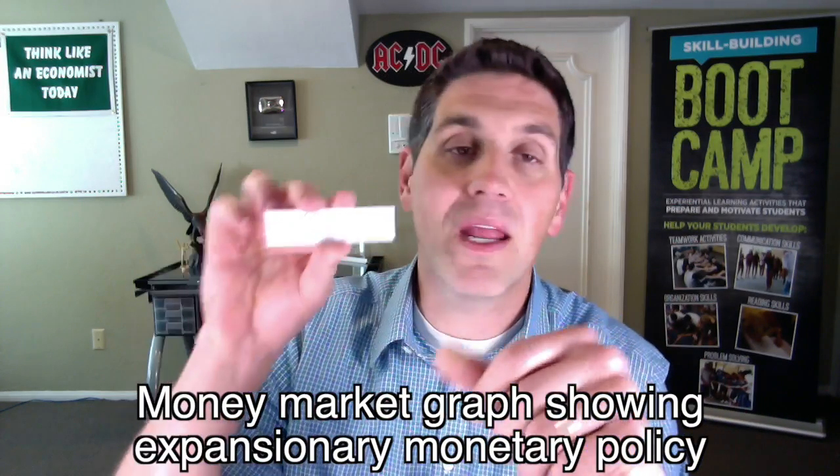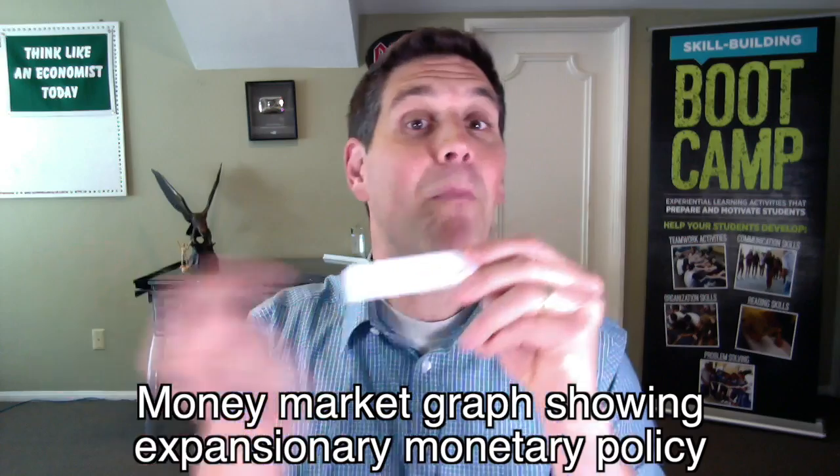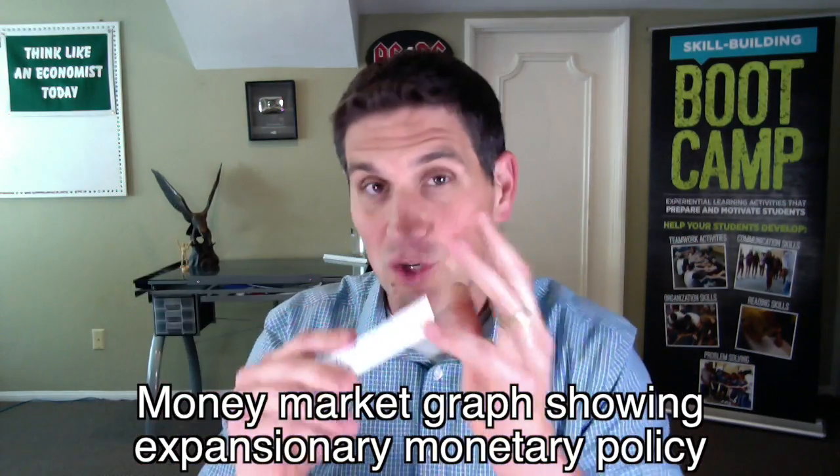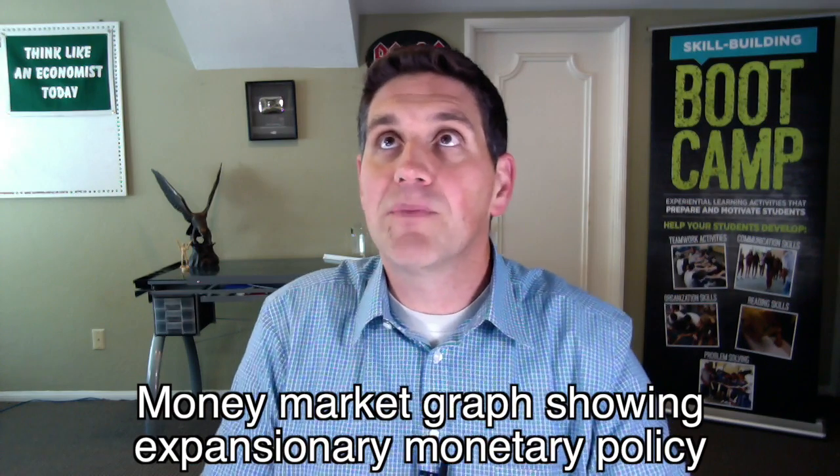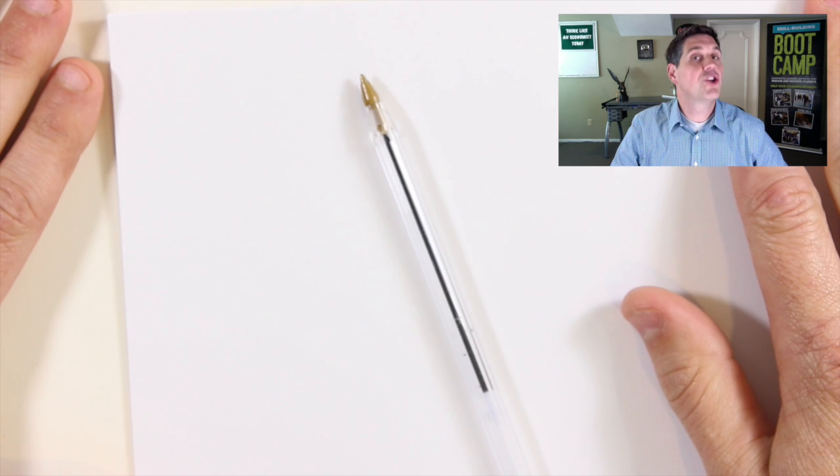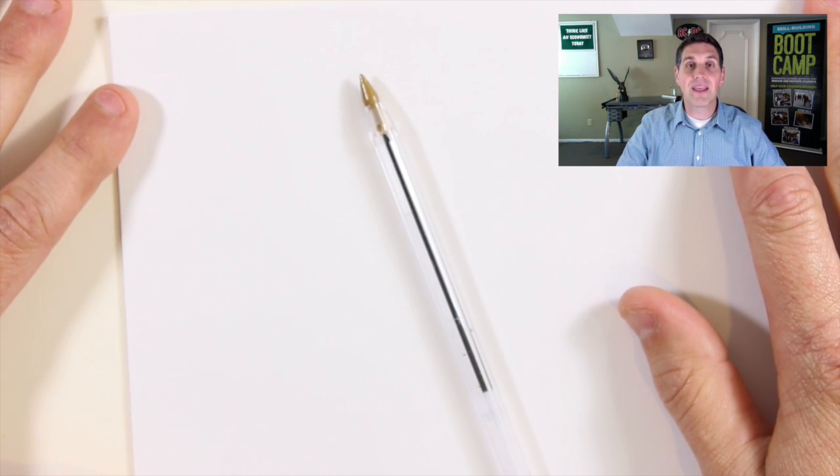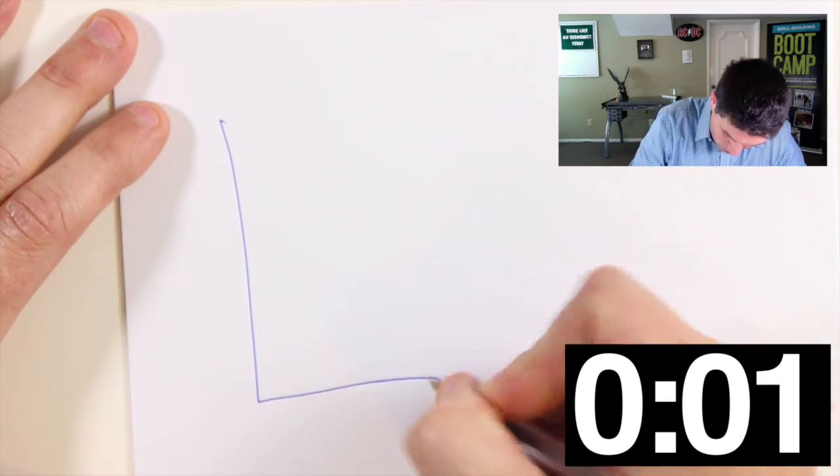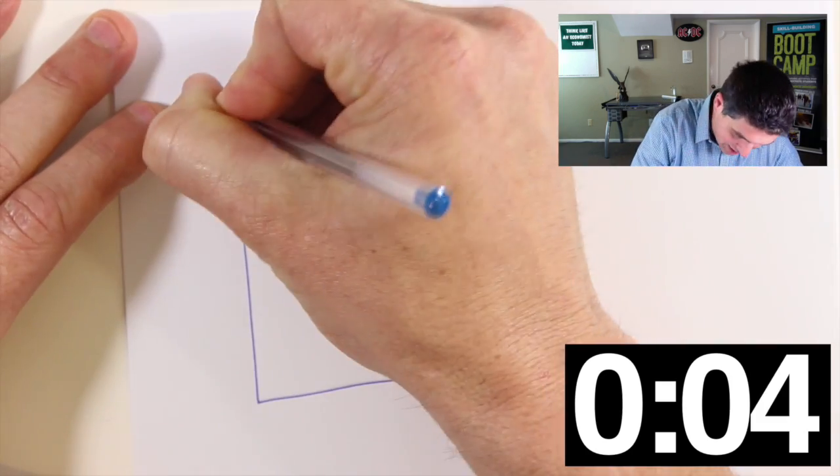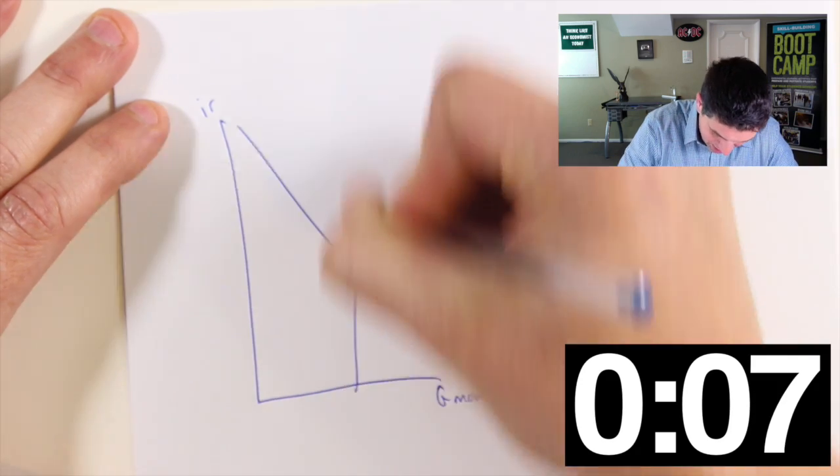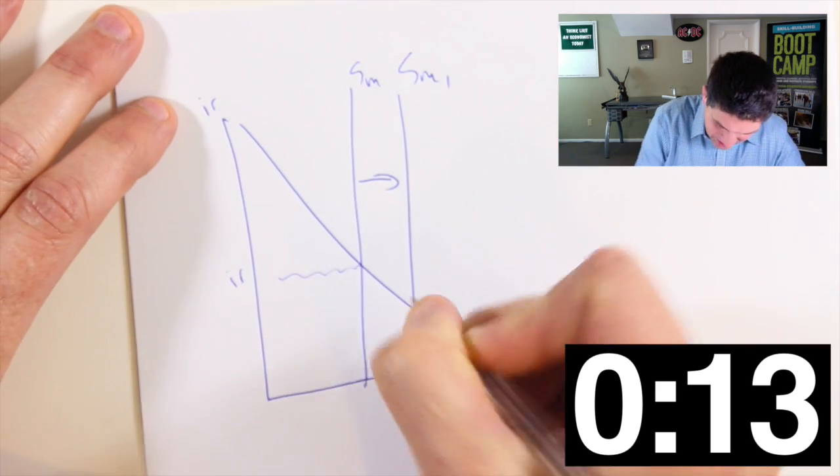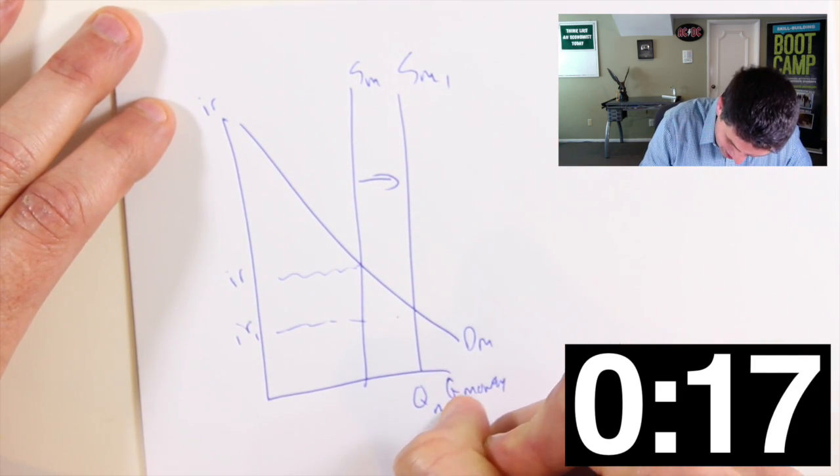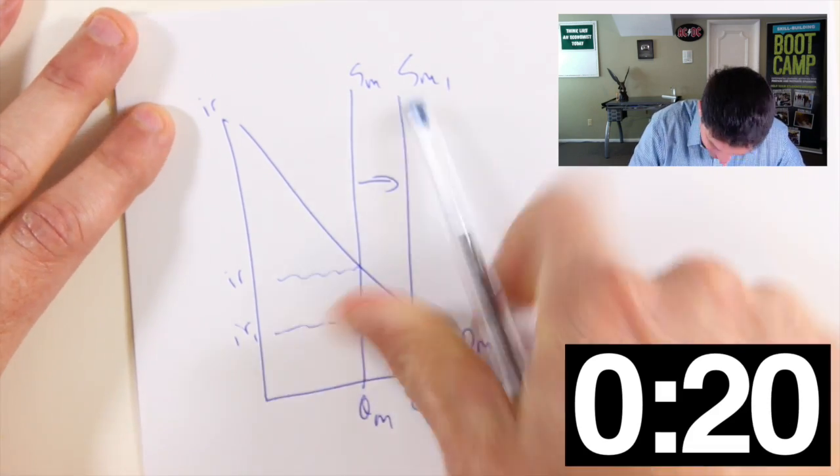Let's get the next one ready. Randomly picking here, we've got the money market graph showing the supply and demand for money, showing expansionary monetary policy. You have to show the shift that occurs. Got a new piece of paper. On your mark, get set, go. We've got the quantity of money, nominal interest rate. This is the demand for money. There's a supply of money. Showing currently the interest rate right there. Supply of money shifts to the right. That's an increase to the money supply. I'll put money one and QM. Done.